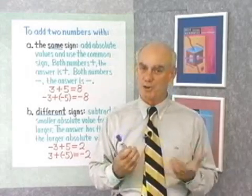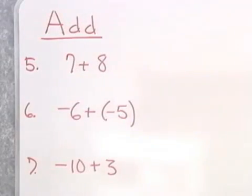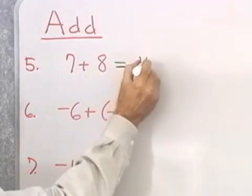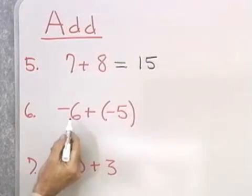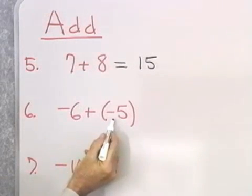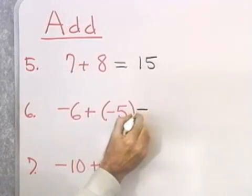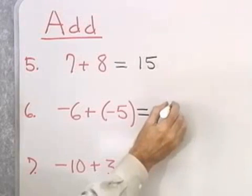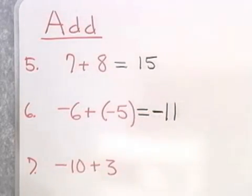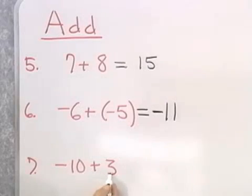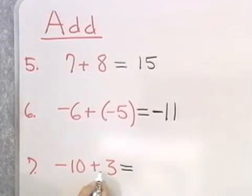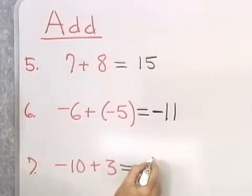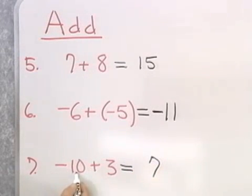Let's work a few more problems. Problem 5: 7 plus 8, two numbers with the same sign. I add absolute values and get 15; they're both positive, so the answer is positive 15. Problem 6: negative 6 plus negative 5, two numbers with the same sign. I add absolute values: 6 plus 5 is 11, and the common sign is negative, so the answer is negative 11. Problem 7: negative 10 plus 3 — that's negative 10 plus positive 3, since no sign means positive. I subtract the smaller absolute value from the larger: 10 minus 3 is 7, and I use the sign of the number with the larger absolute value, which is negative. The answer is negative 7.